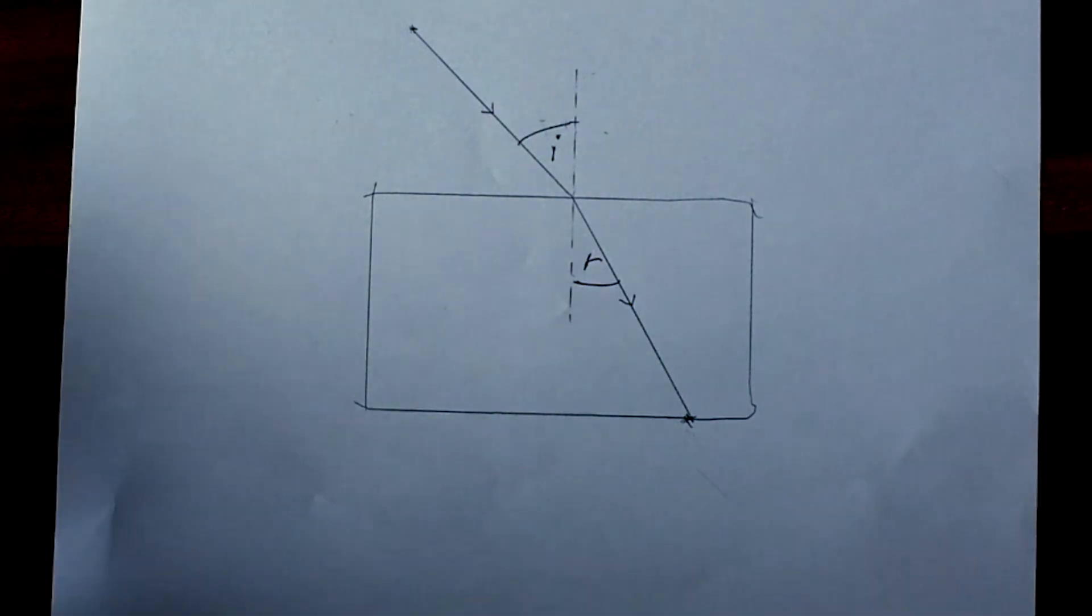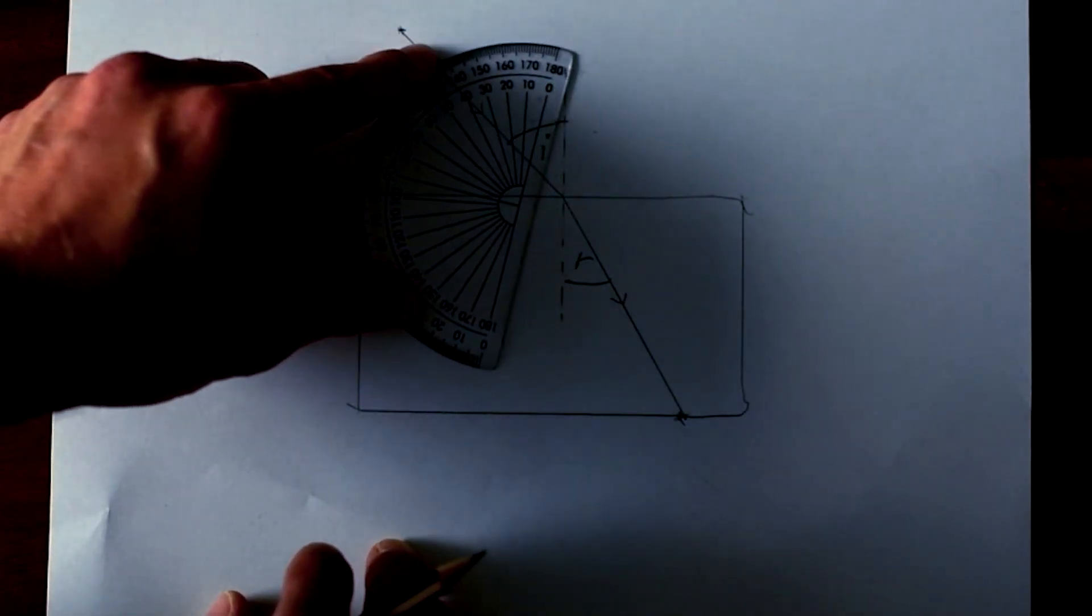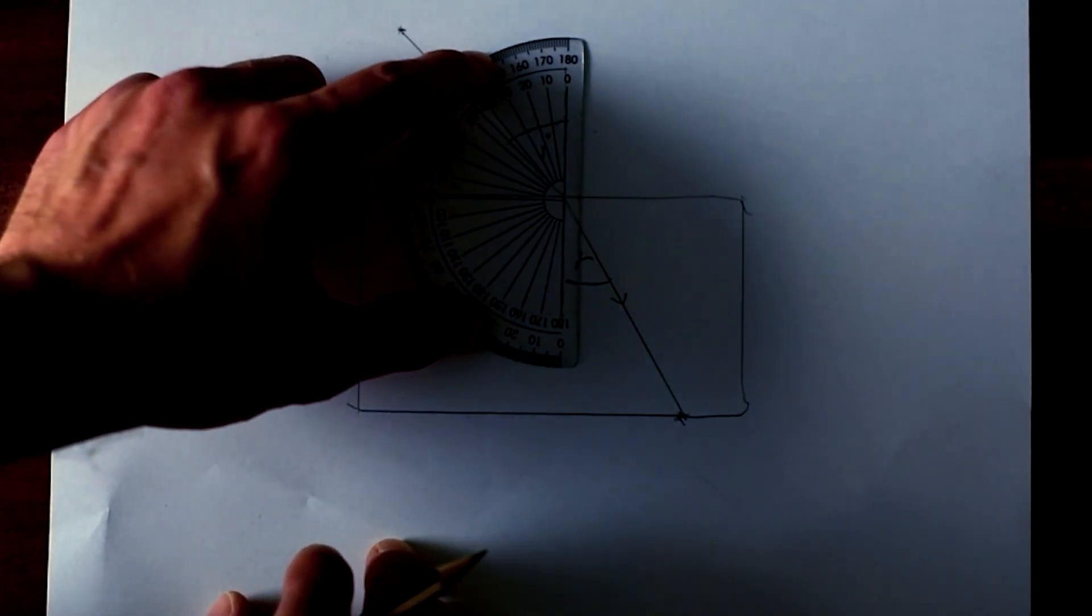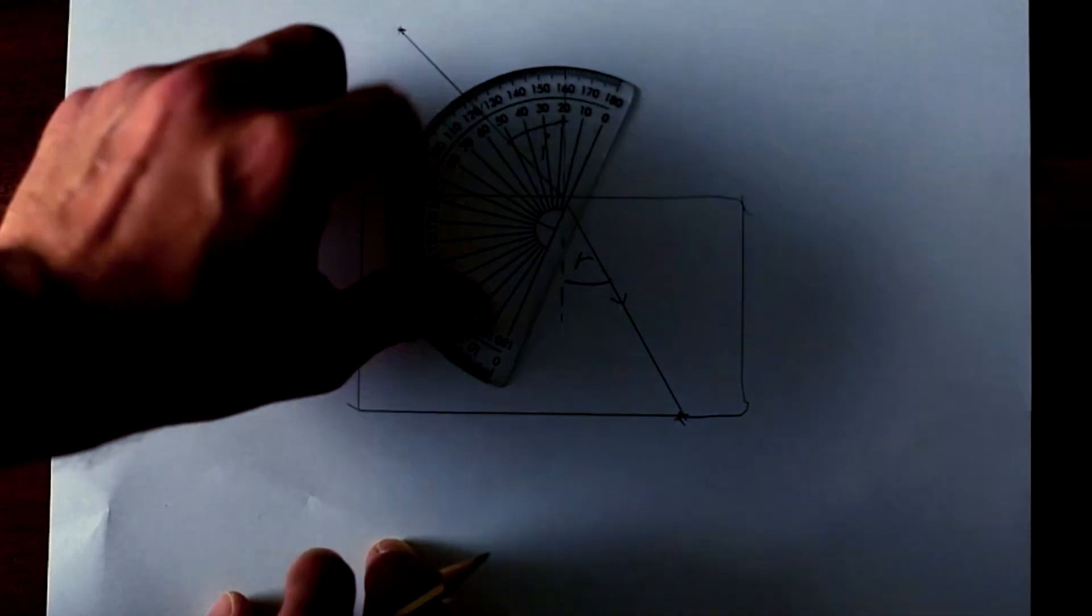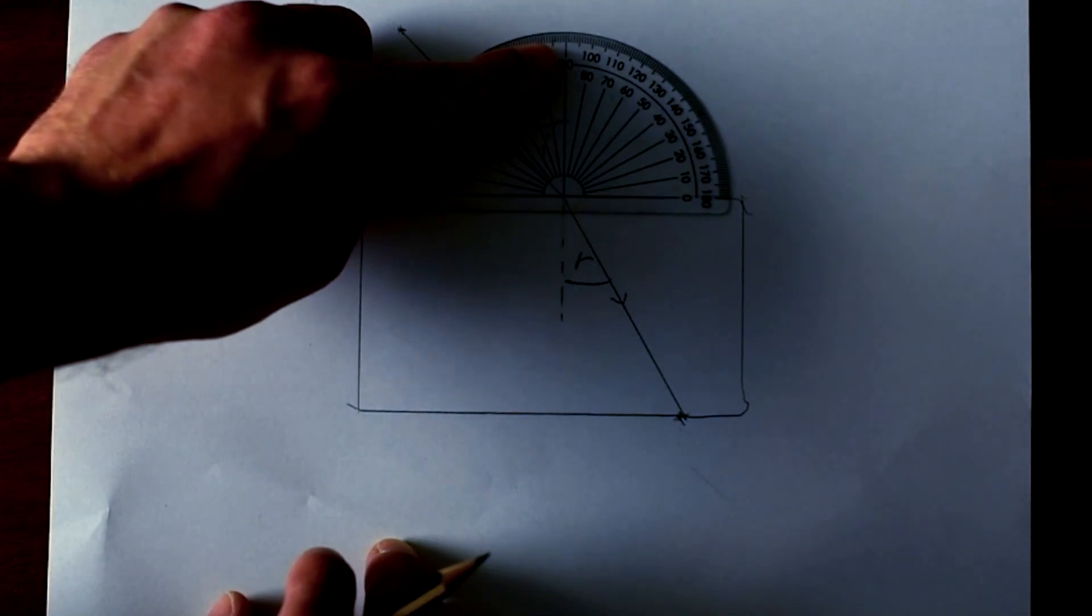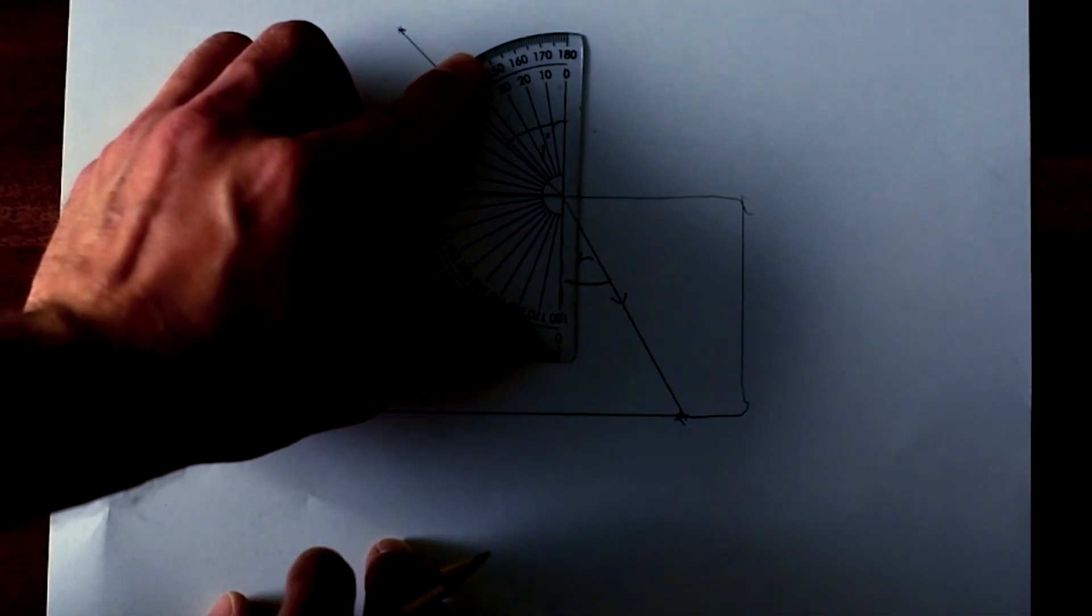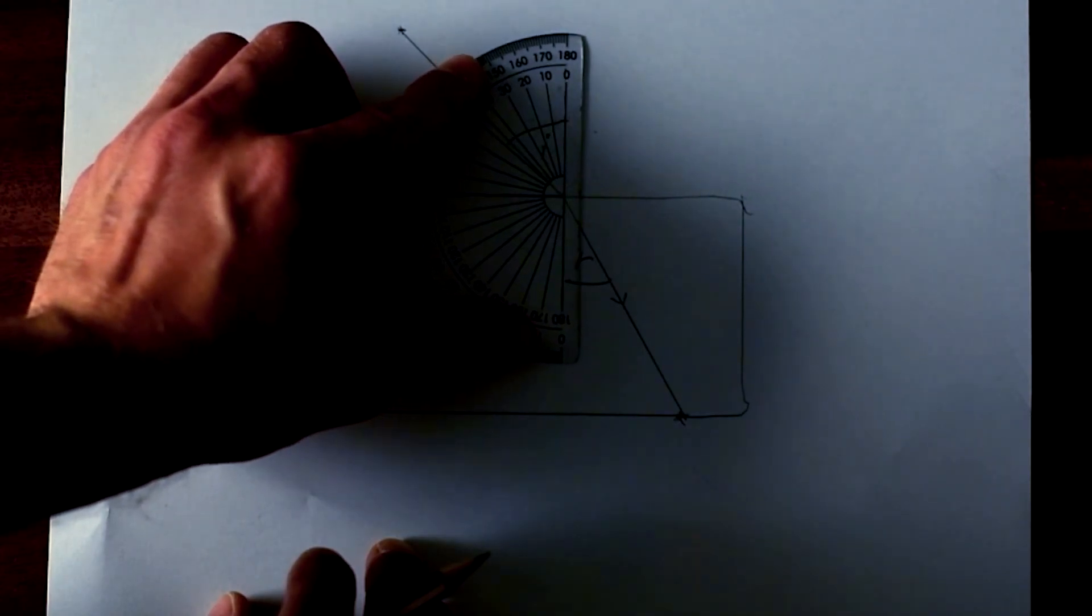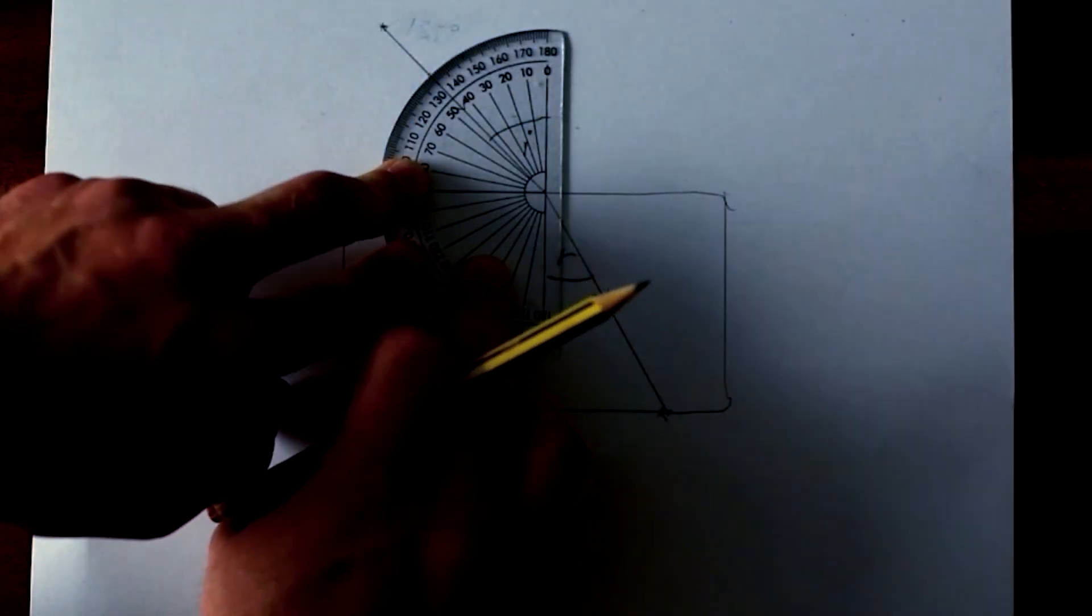Now what we need to do is measure those angles. This is what some people find confusing, getting the protractor the right way around. All you have to do is make sure that the protractor is this way around with zero on the normal. You don't use a protractor like this, you have it turned through 90 degrees like this.